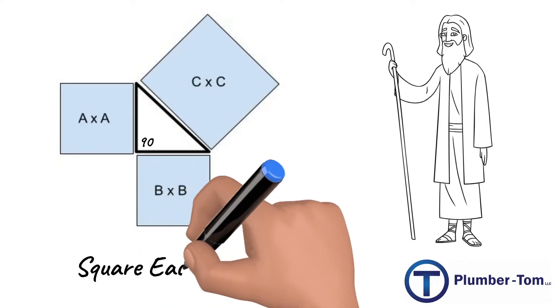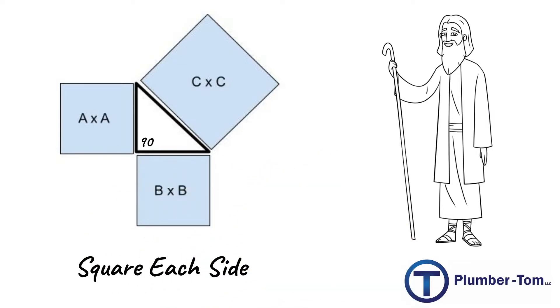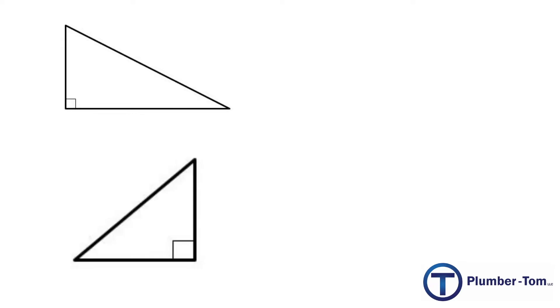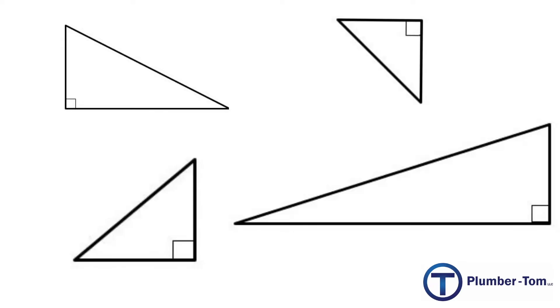the area of the two smaller sides when added together would equal the area of the diagonal side of the triangle. Pythagoras found this to be true with every right triangle he tried it on regardless of its shape or size.